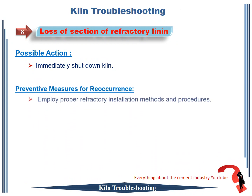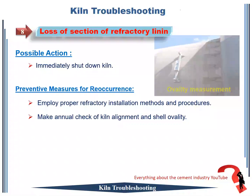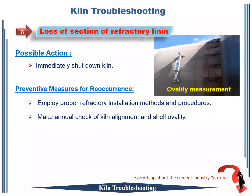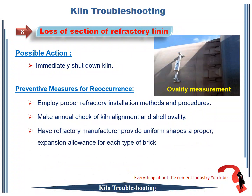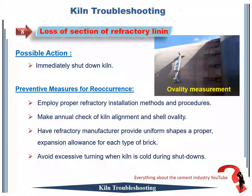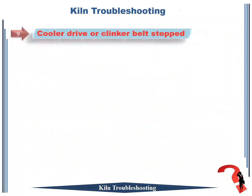1. Employ proper refractory installation methods and procedures. 2. Make annual check of kiln alignment and shell ovality. 3. Have refractory manufacturer provide uniform shapes and proper expansion allowance for each type of brick. 4. Avoid excessive turning when kiln is cold during shutdowns.